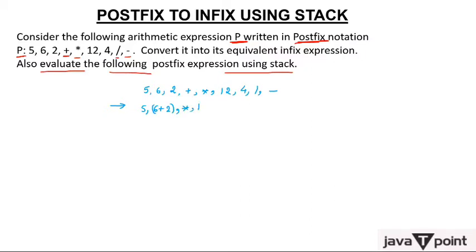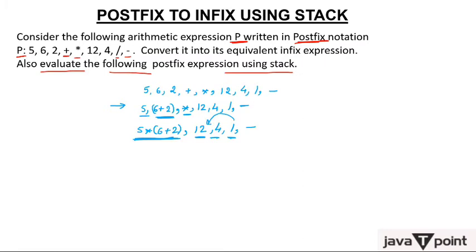Now (6 + 2) becomes one operand. With the next operator *, you have operand 5, operand (6 + 2) — put the operator in between: 5 * (6 + 2). Continuing, you have 12, then 4, then divide. Put divide between 12 and 4, giving (12 / 4). Remaining is minus.